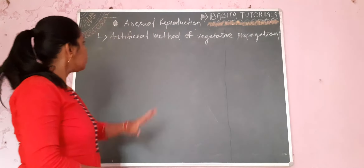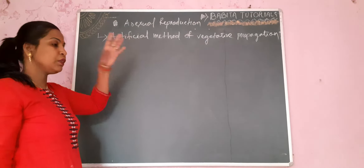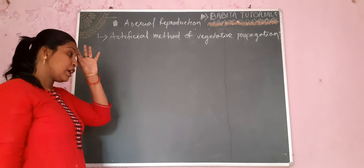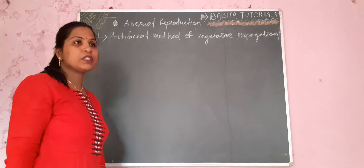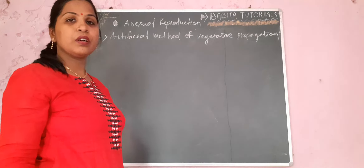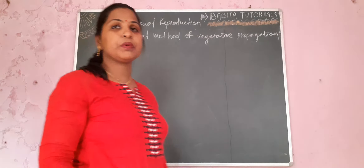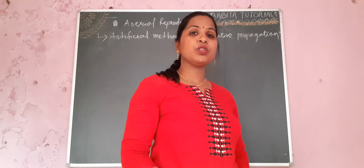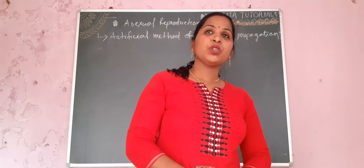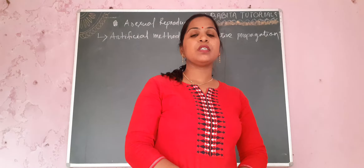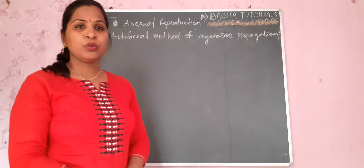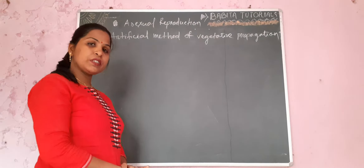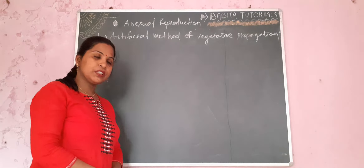Now the topic: Artificial Method of Vegetative Propagation. It is a way of asexual reproduction which is mostly done by horticulturists and farmers to get good quality crops and vegetables.